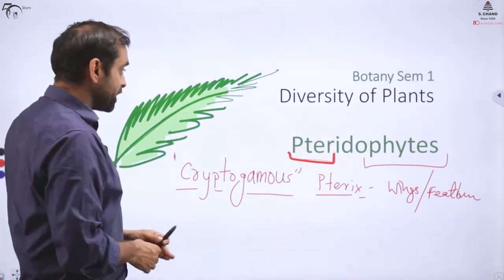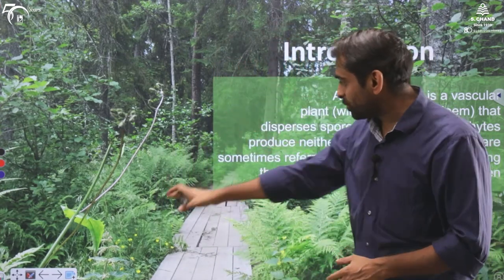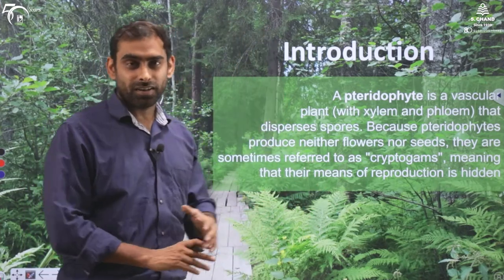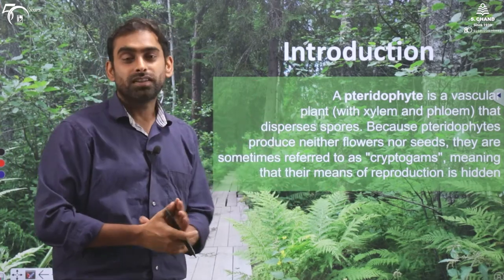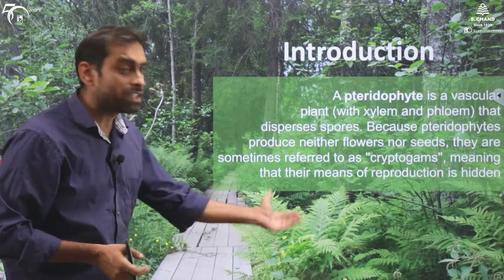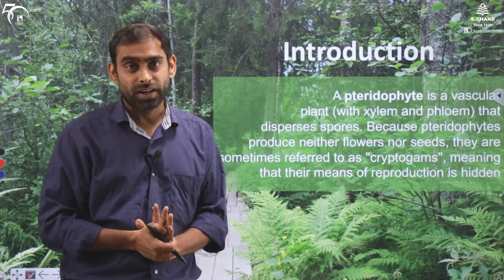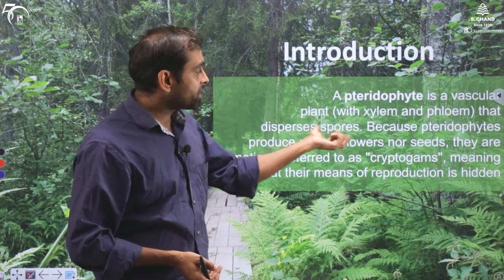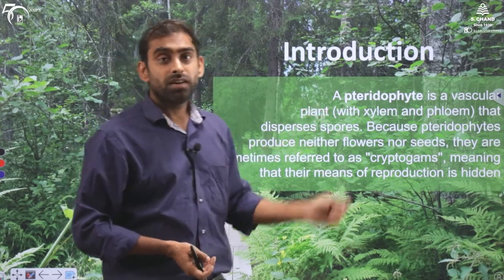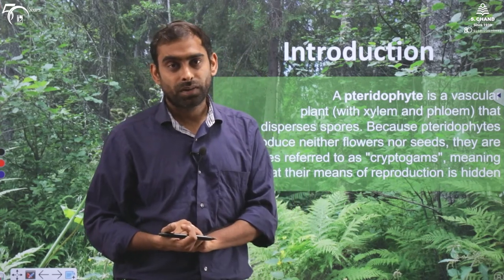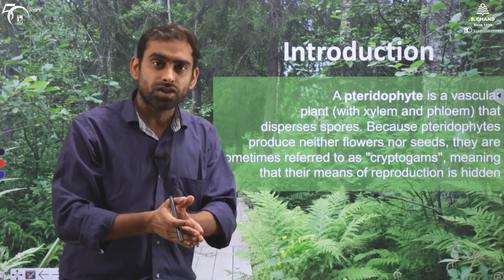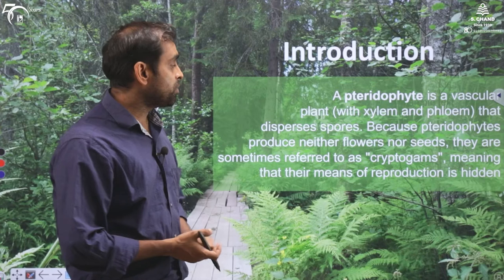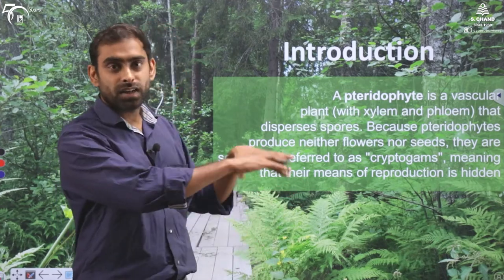Higher plants, where the reproductive process is apparent, are called phanerogamous. Pteridophytes, whose reproduction is hidden, fall in the cryptogamous category. This picture shows ferns along both sides of a track from the Tundra region of Scandinavia and Russia, where these plants are abundant. They are also found in high-altitude areas.